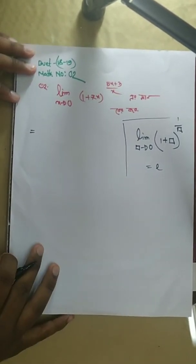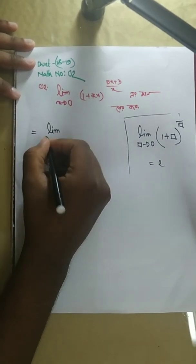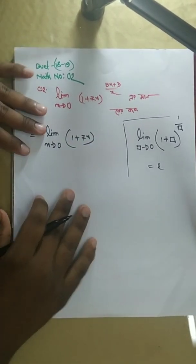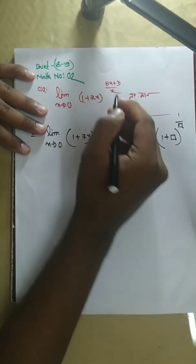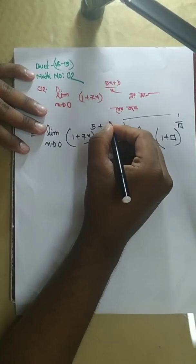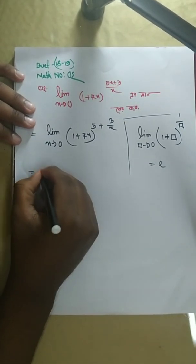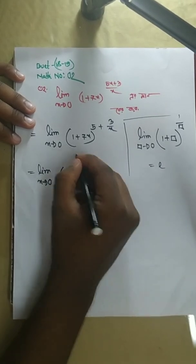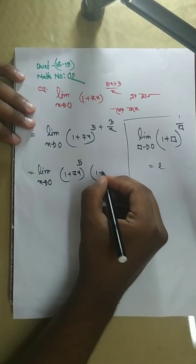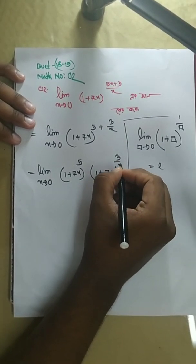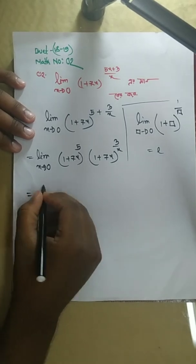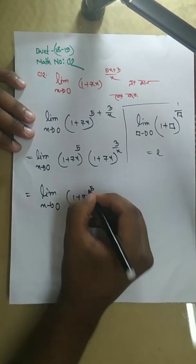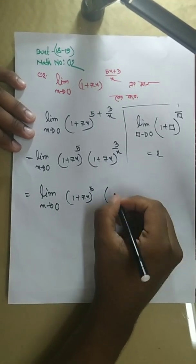Similarly, we are going to apply this to our problem. We look at the limit as x tends to 0 of 1 plus 7x, examining the 5x component. We rewrite to get limit x tends to 0 of (1 plus 7x) to the power 5, and further consider limit x tends to 0 of (1 plus 7x) in the required form.